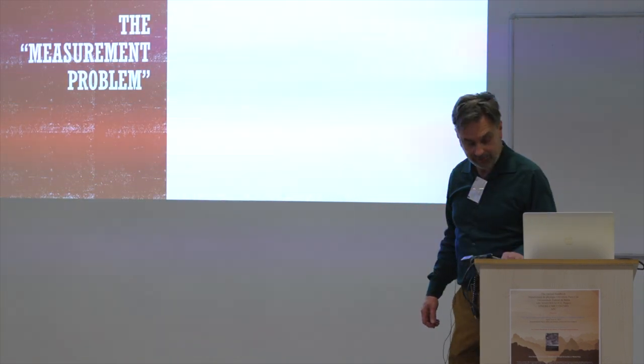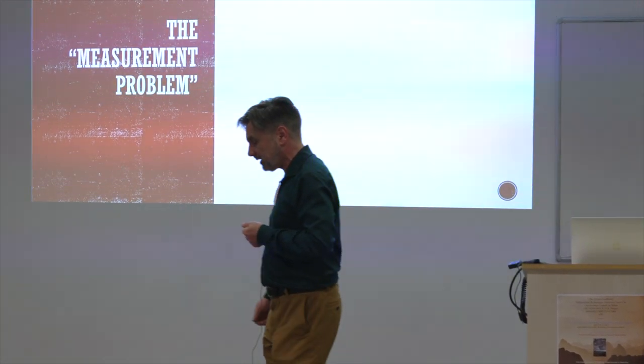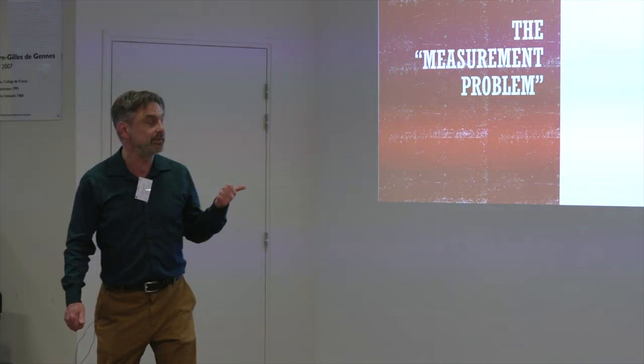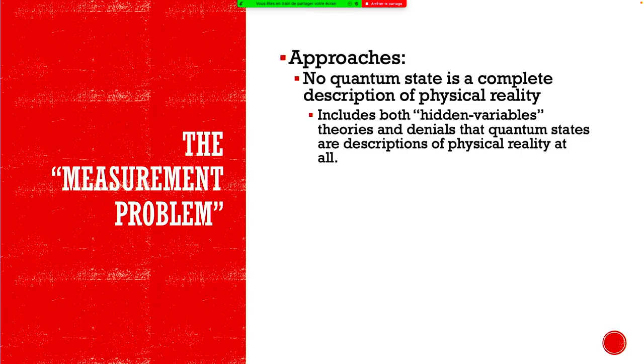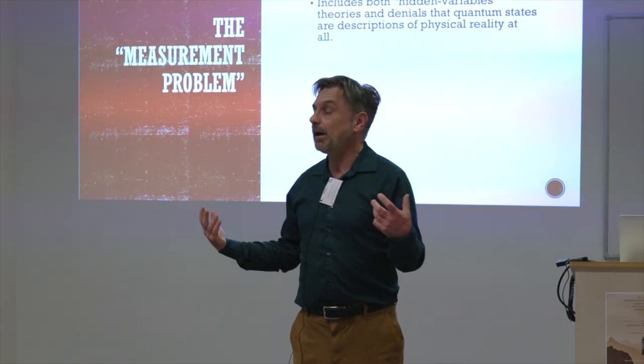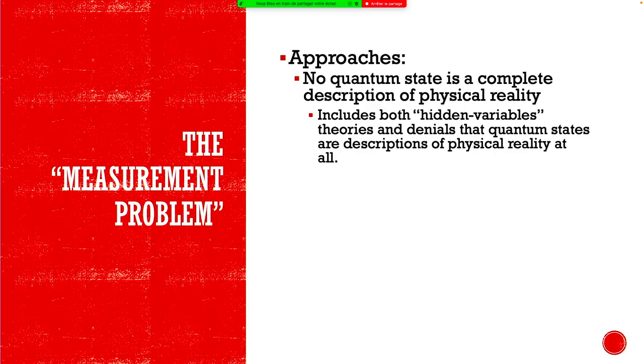And that gives us a nice way of classifying approaches. So you can take the first horn of Bell's dilemma, say the quantum state isn't everything, it's not a complete description of physical reality. And that includes usually you think about hidden variables approaches with that, where you might supplement the quantum state by extra variables. But of course any approach that says the quantum states don't represent anything in physical reality at all also denies that the quantum state is a complete description of physical reality, as long as there is in fact something rather than nothing.